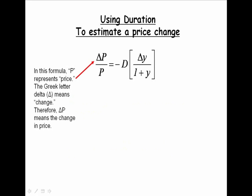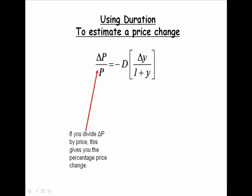In this formula, P represents price. The Greek letter delta means change. Therefore, delta P simply means the change in price. If we divide the change in price by the price, this gives us the percentage price change.